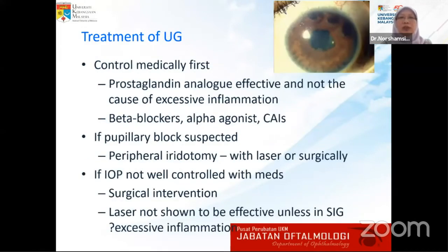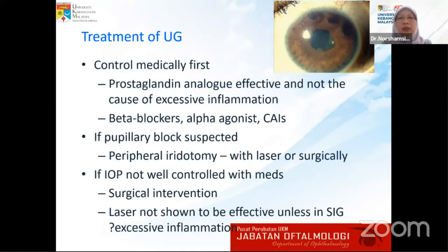Treatment of uveitic glaucoma is medical control first. Prostaglandin analogues are effective and are not the cause of excessive inflammation, unlike what people used to think. Other options include beta blockers, alpha agonists, and carbonic anhydrase inhibitors. But if we suspect pupillary block, a peripheral PI — either done surgically or by laser — is mandated. If IOP is not well controlled, surgical intervention is indicated.